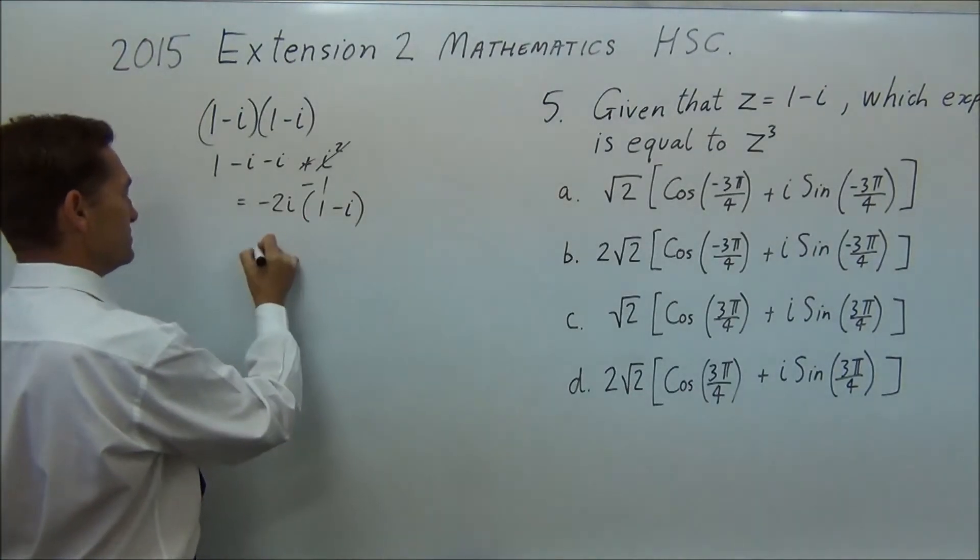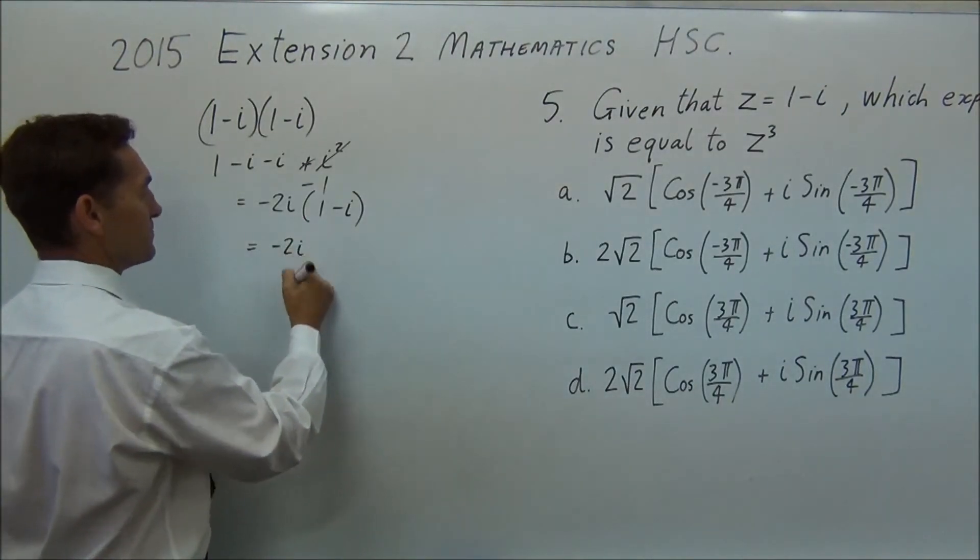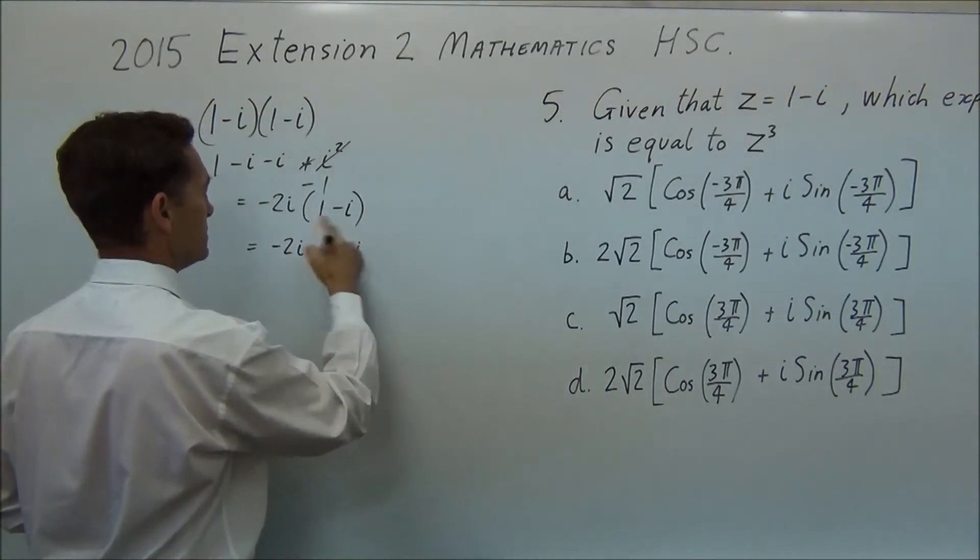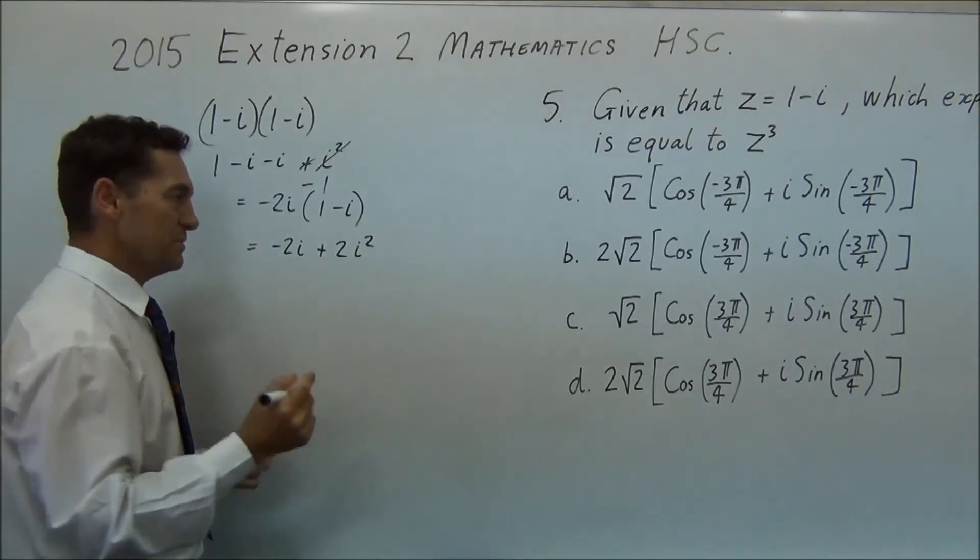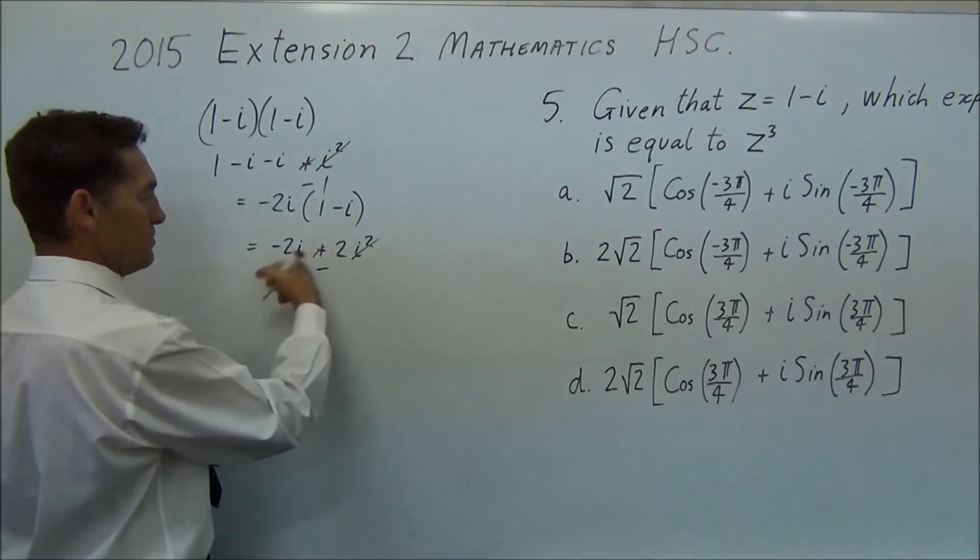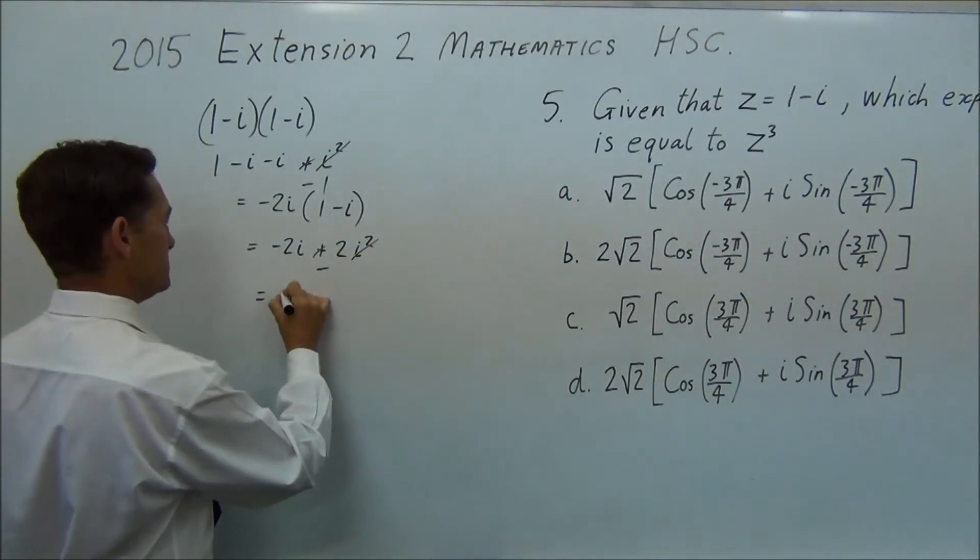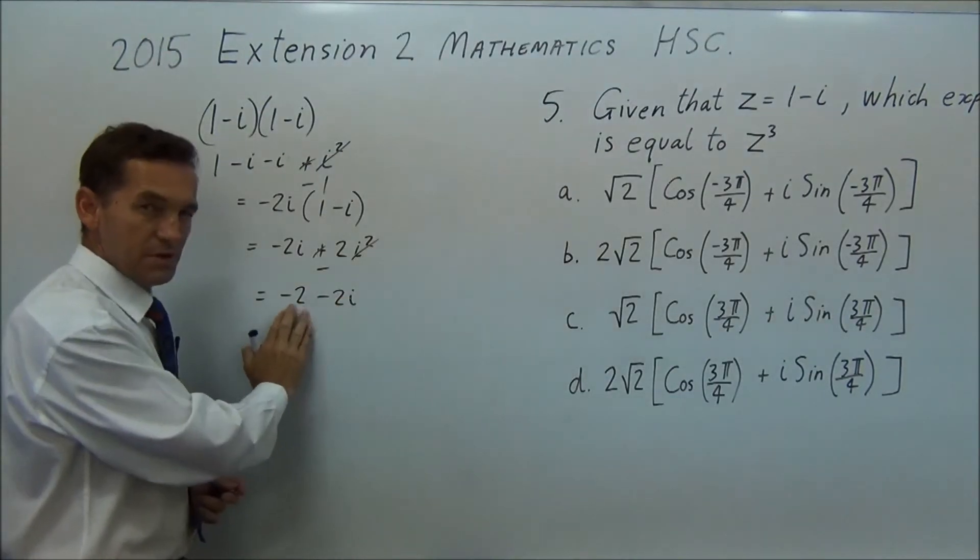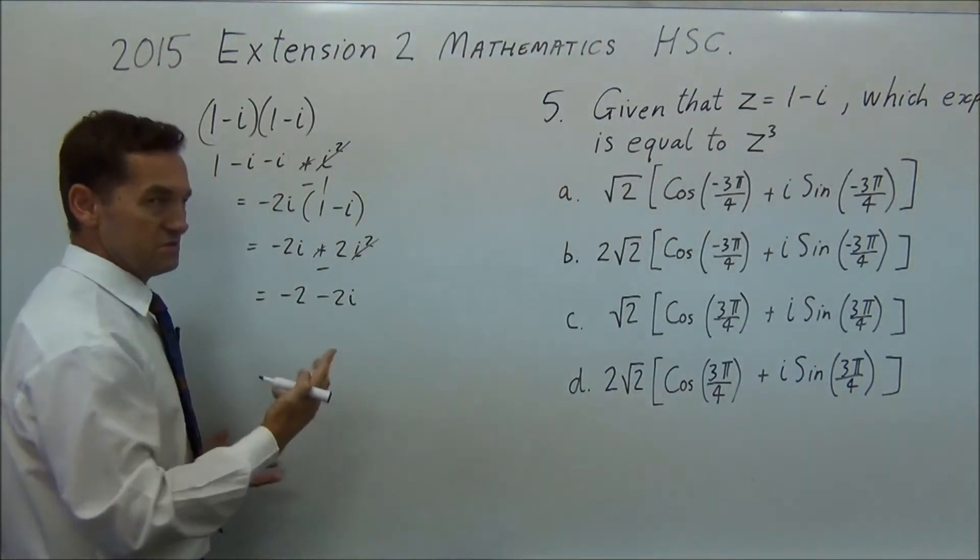Minus two i times one. Well that's pretty easy. Minus two i. Minus times a minus is a plus. So we've got two i squared. Now what's i squared? Minus one. So wipe that out and put a minus. Rewrite it backwards so it looks neat. Minus two, minus two i. Usually you write the number before the i.